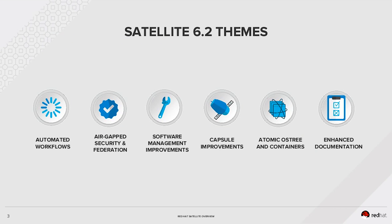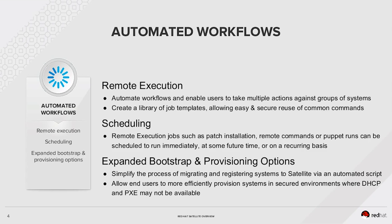Satellite 6.2 was recently released and these are the major themes included in the release. We have new technologies in the area of automated workflows, new solutions for air gap security and federation, some improvements to our software management, a number of improvements to the satellite capsule, new support for atomic OS tree and containers, and enhanced and overhauled documentation.